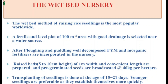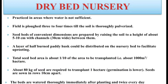Transplanting of seedlings is done at the age of 15 to 21 days. Younger seedlings are preferable as they establish themselves more quickly after transplanting. Dry bed nursery: as the name indicates, dry bed nurseries are prepared in areas where water is not sufficient.